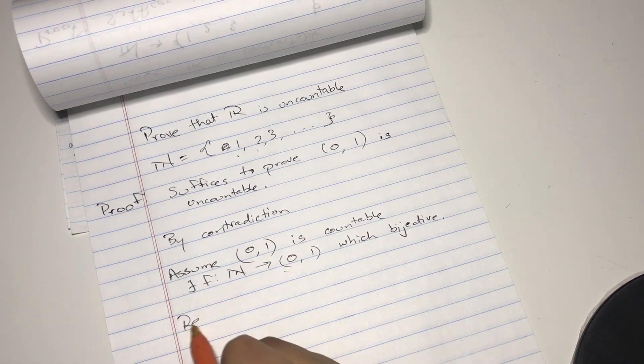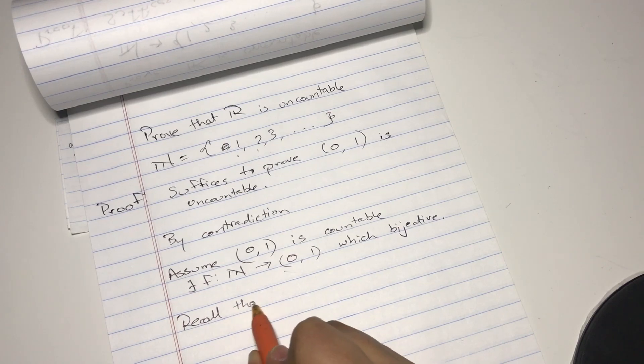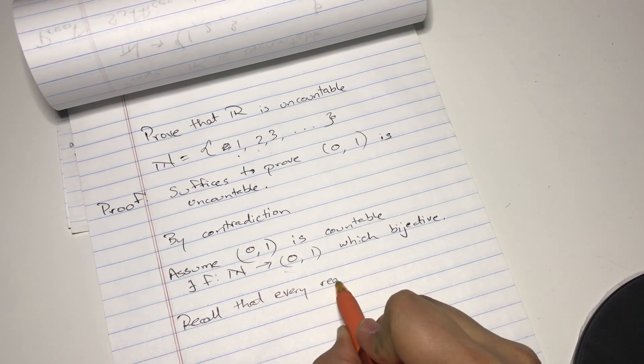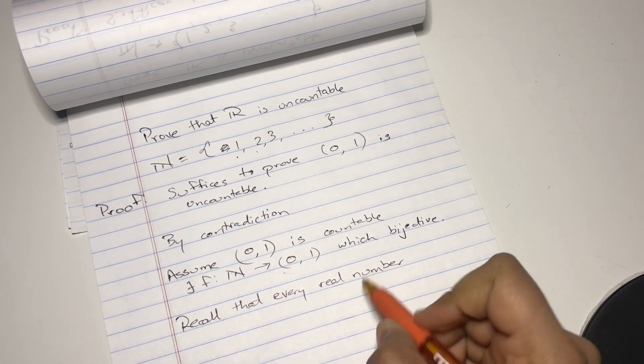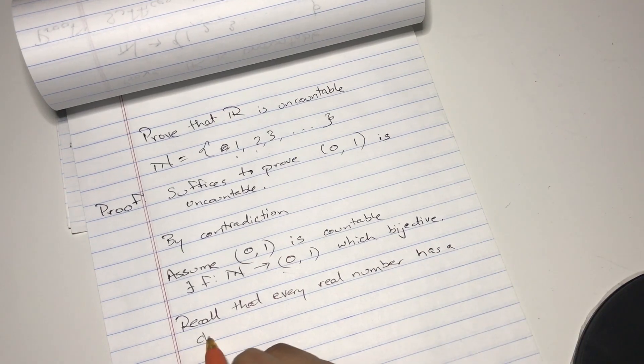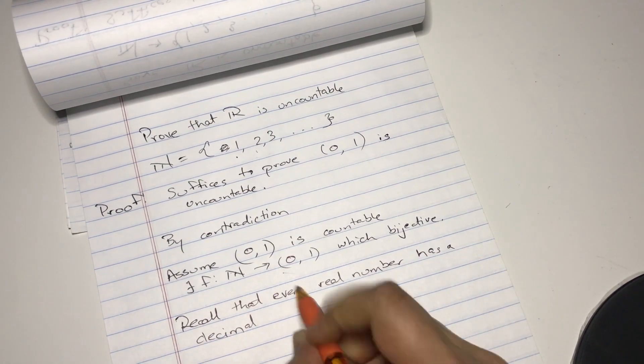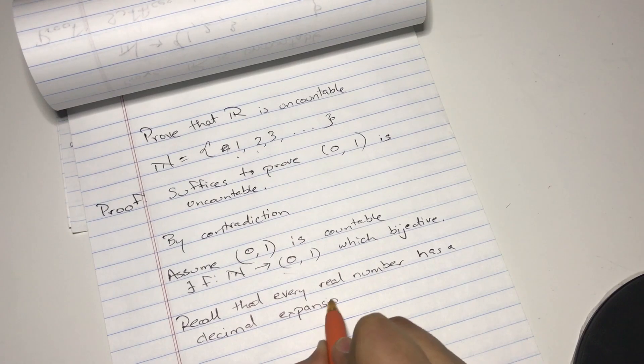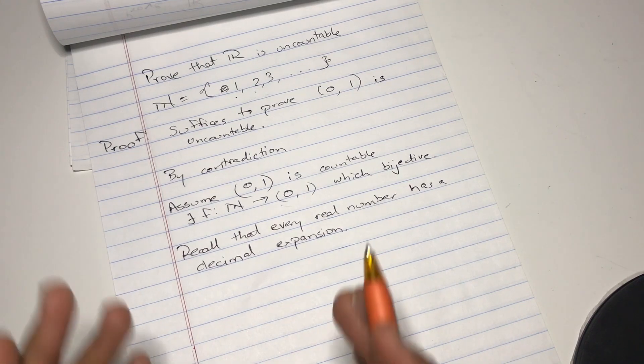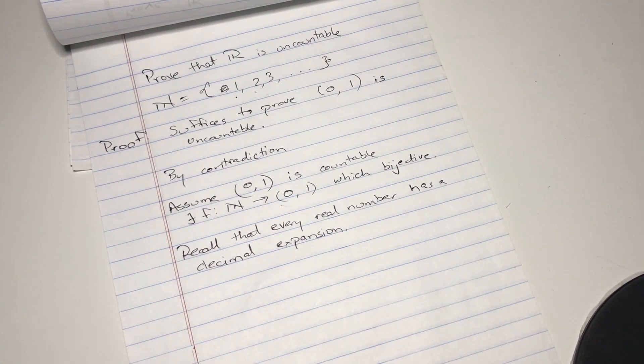And now the next step is to recall that every real number has a decimal expansion. Like pi is 3.1415 so on and so forth, square root of 3 is 1.732 dot dot dot. You could make every number into a decimal expansion.